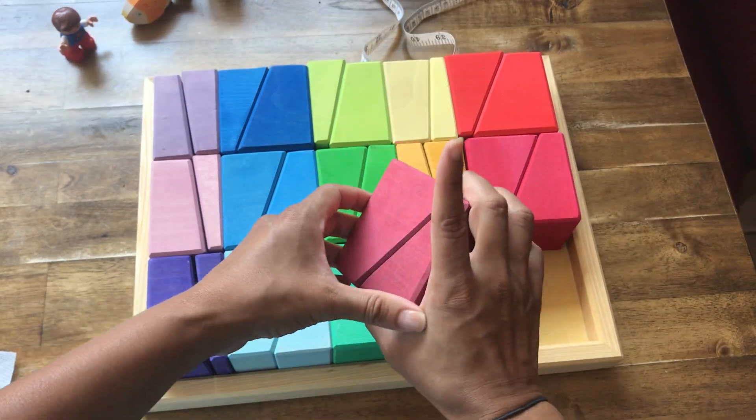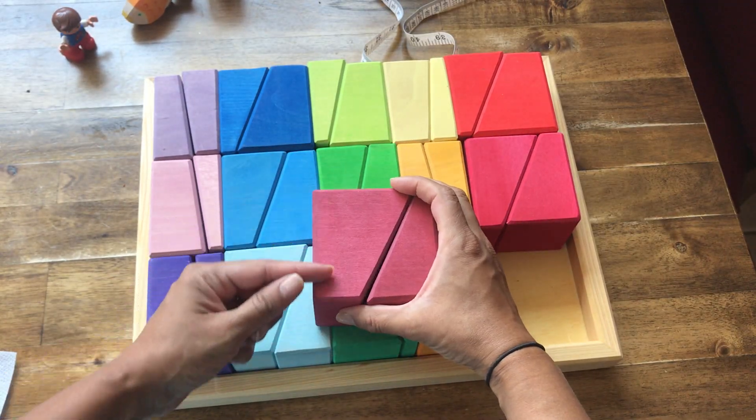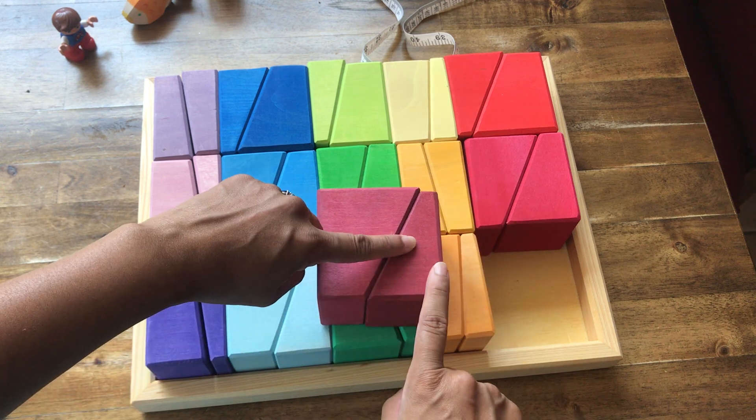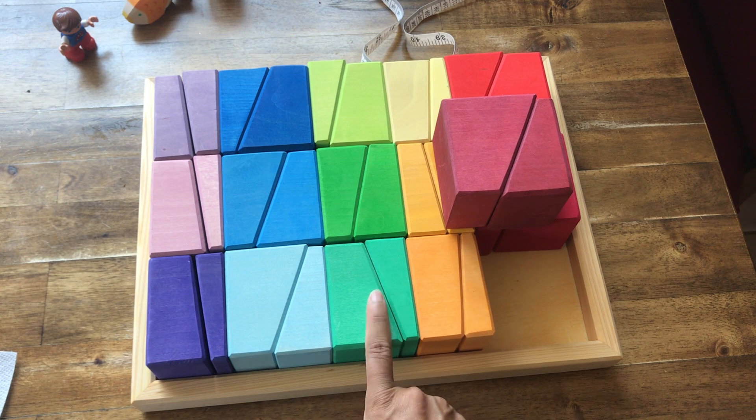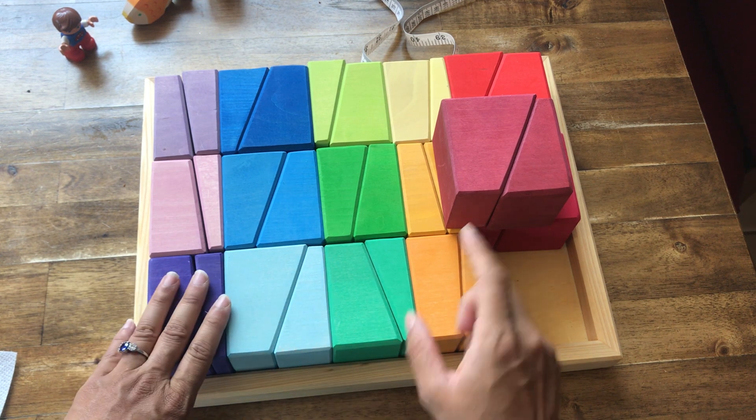So they're all different sizes. They all measure eight centimeters this way, but their widths vary. So these are eight by eights. We have eight by five, eight by six, eight by seven, and eight by eight.